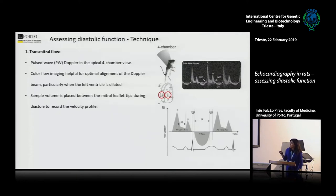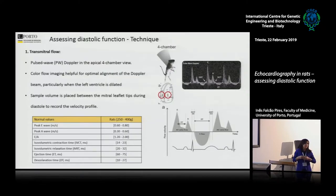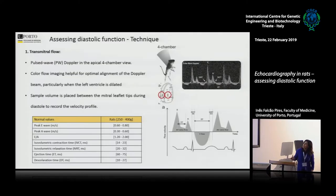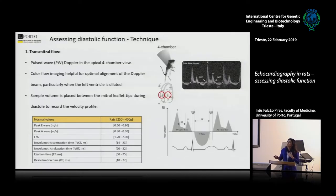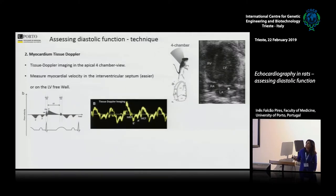One thing I tried to provide in this presentation is our reference values. I have to disclose that this is our own experience — it's not the standards. This needs to be discussed with other labs doing echocardiography with different machines, because this is highly dependent on the lab and the machine. So this is the interval of normal values, at least in our own experience, for rats between 200 and 400 grams. To separate E and A, we need a standard for that.